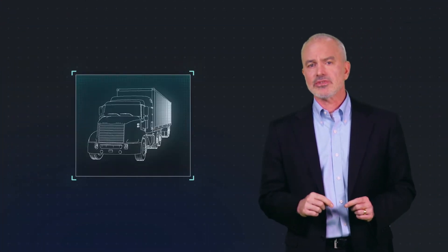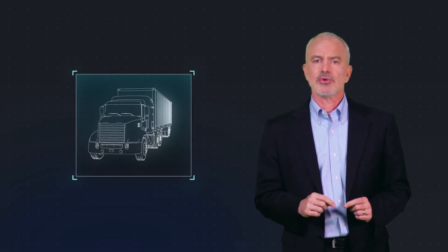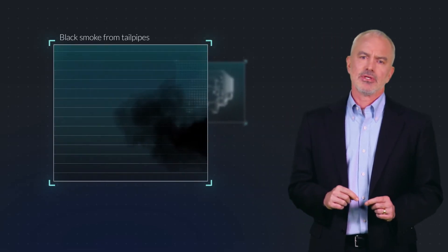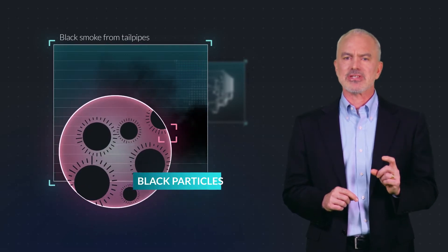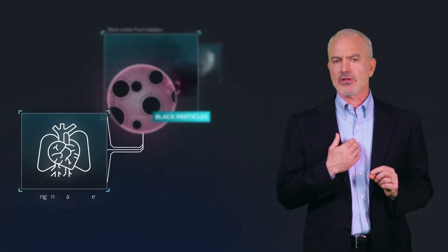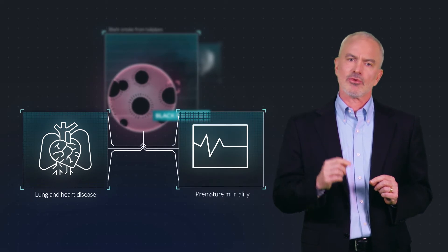One major source of air pollution is diesel trucks and buses, which emit black smoke from their tailpipes. This diesel exhaust is composed of fine particles that become trapped deep in the lungs and can lead to lung and heart disease and premature mortality.